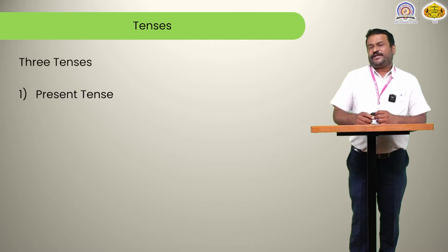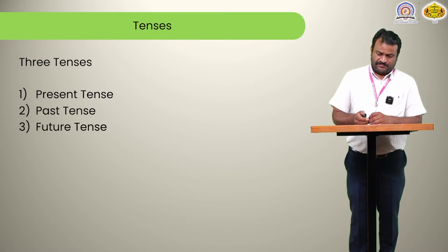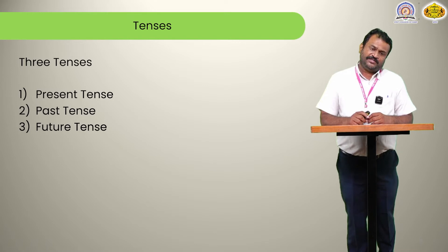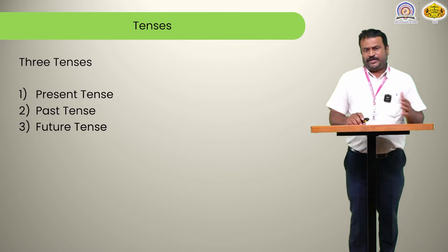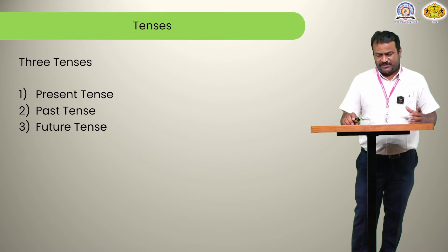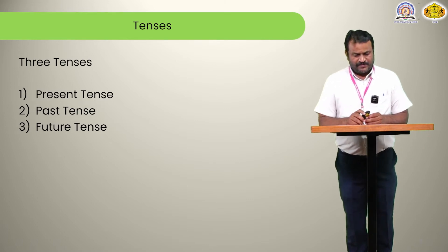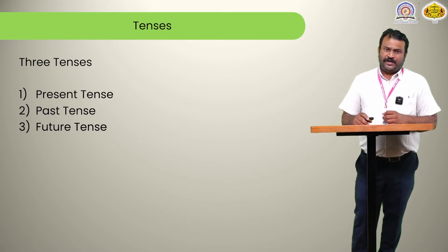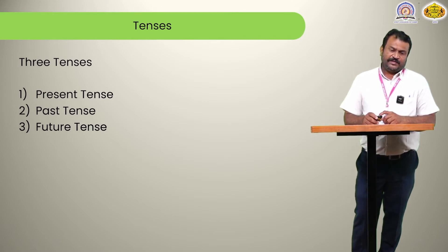There are three types of tenses: present tense, past tense, and future tense. Tenses are the backbone of the English language. With the use of tenses, we can frame sentences — short sentences, long sentences — we can write essays, we can write stories. So tenses are very important, and not only important, but using them correctly is very important.